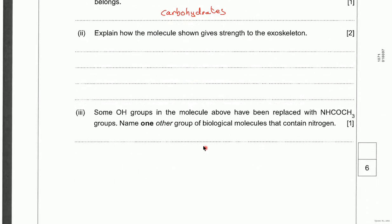Some OH groups in the molecule above have been replaced with NHCOCH3. Name one other group of biological molecules that contain nitrogen. So there's umpteen that you could have amino acids is one. If I dictate the rest, you can have proteins, you can have DNA, you can have RNA.